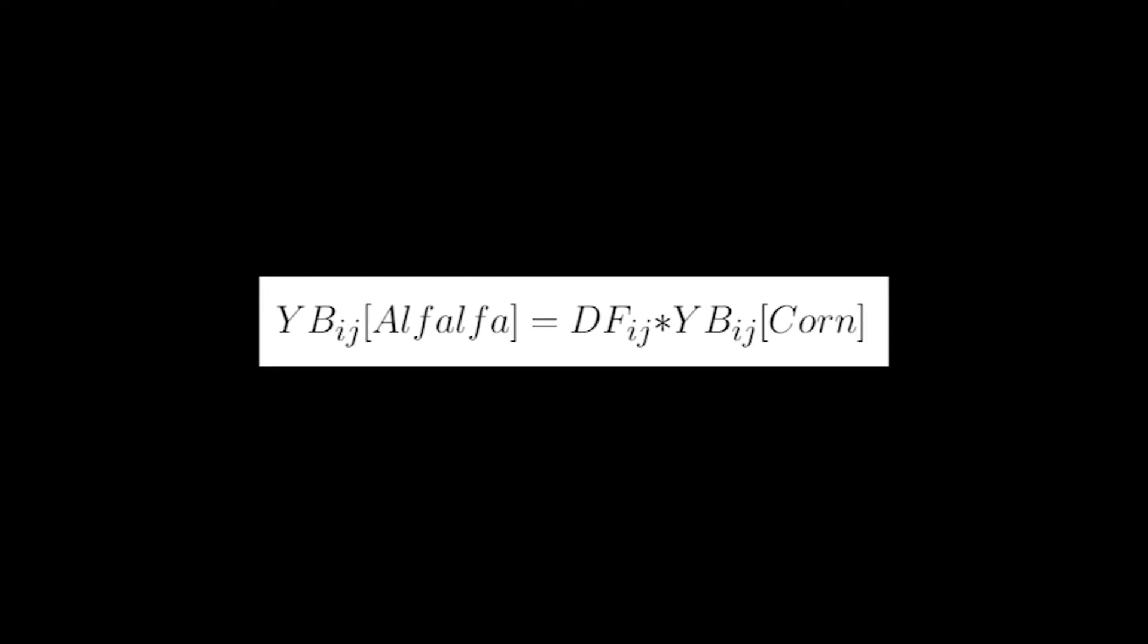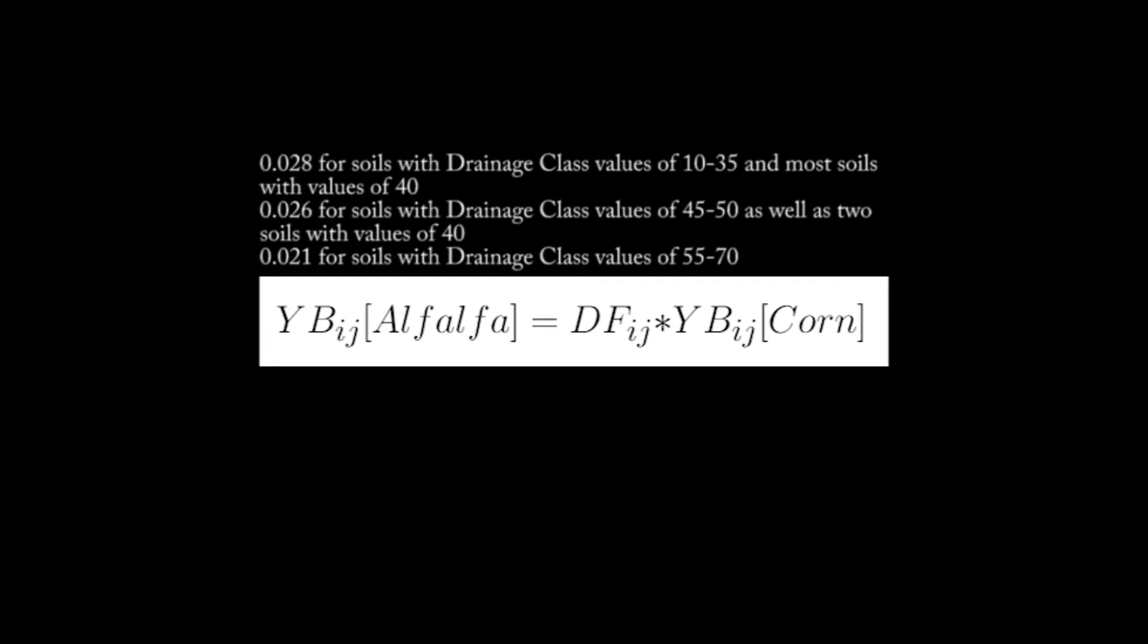DF_ij is a drainage factor equal to 0.028 for soils with drainage class values of 10 through 35, as well as most soils with drainage class values of 40.